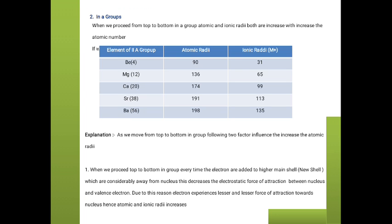In groups, as we move from top to bottom, the addition of each electron takes place in the next shell — a new shell. As we move from top to bottom in the periodic table, each time the addition of an electron takes place into a new or higher shell. That is why the distance between the nucleus and that outermost electron increases, because each time a new shell is introduced.